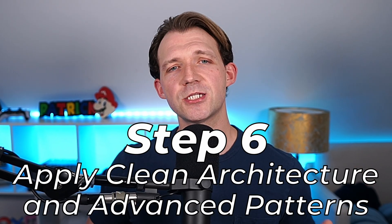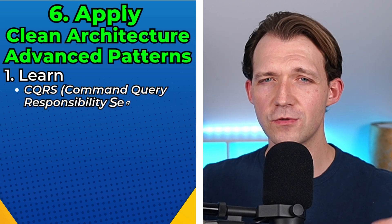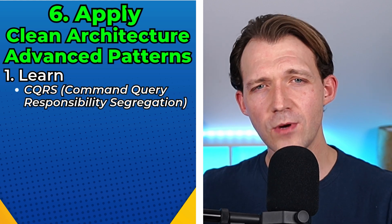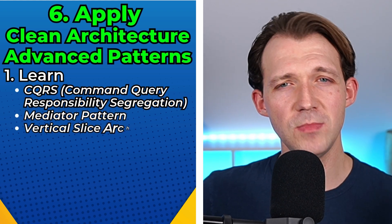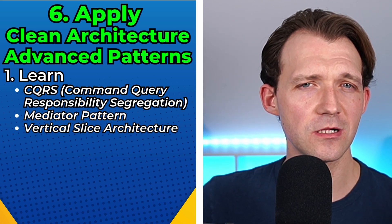Step number six is clean architecture and advanced patterns. Think of clean architecture as organizing your app into clearly defined layers like domain, application, and infrastructure, making it easier to maintain and scale. With CQRS — command query responsibility segregation — you can separate how you read data from how you write data, which is super helpful in larger applications. You can also learn the mediator pattern for better code organization, and another interesting architecture to explore is vertical slice architecture. This step helps you write code that scales well.